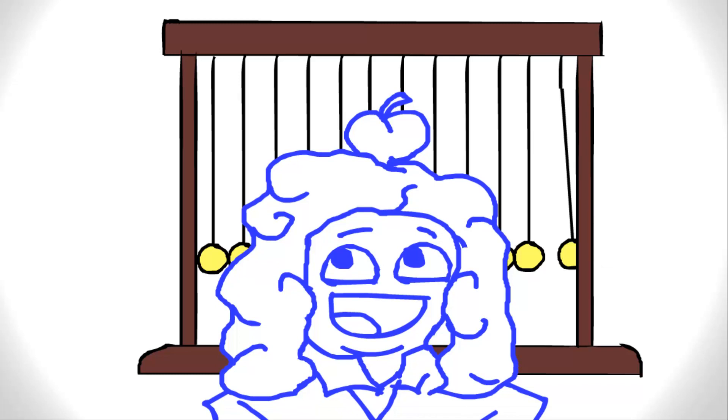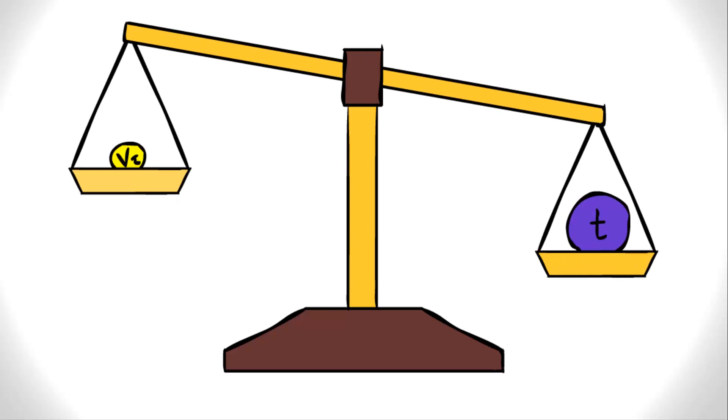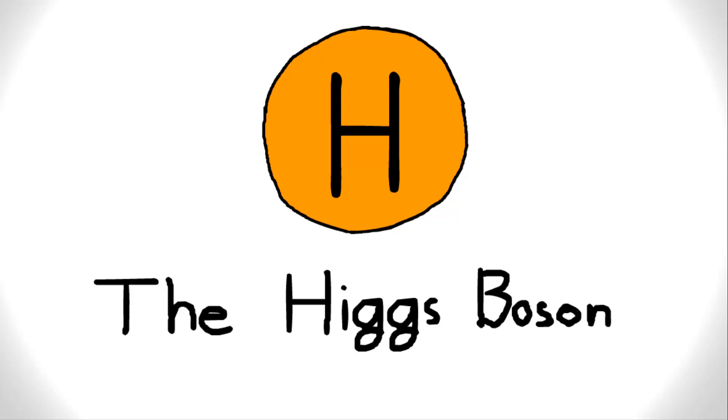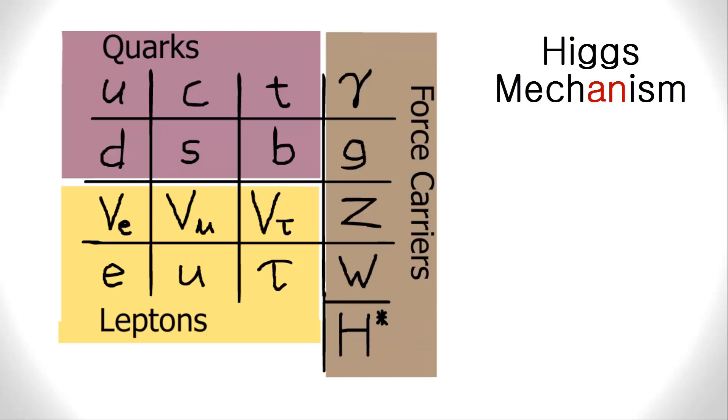Before 2013, a question lingered in the mind of physicists: Why do some particles have more mass than others? And that is where the Higgs boson comes in. The Higgs boson is part of a background field called the Higgs field. This field is made out of many virtual particles which interact with elementary particles. The different amounts of interactions give the particles different masses.